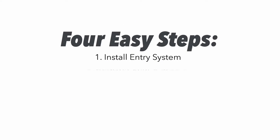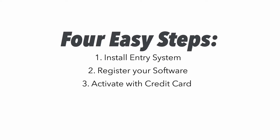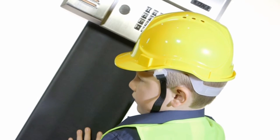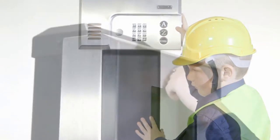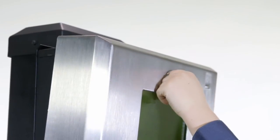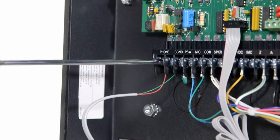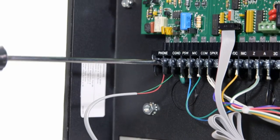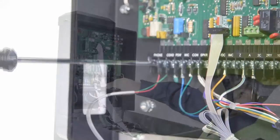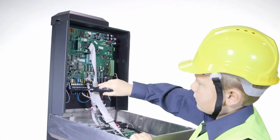You can easily set up and program your telephone entry system in just four easy steps. First, install your entry system, then hook up the phone and data lines between the operator and the cellular unit.